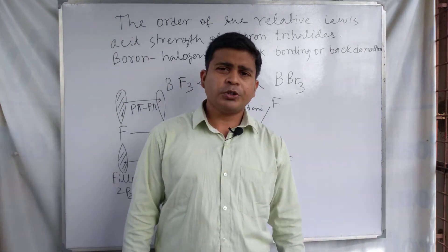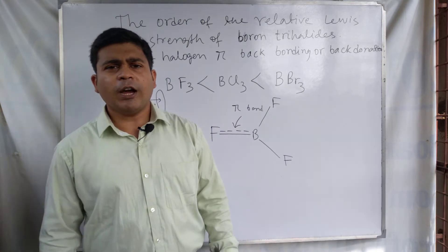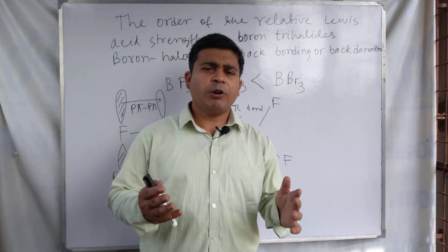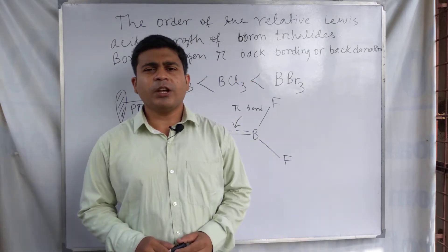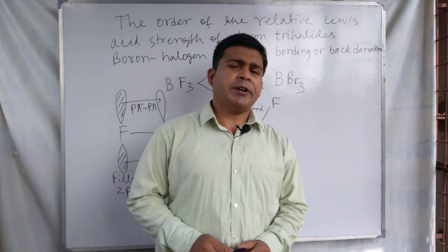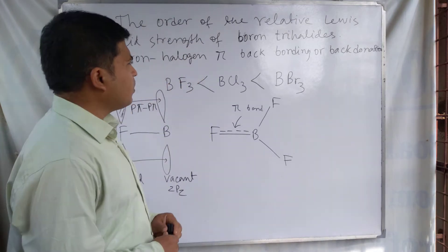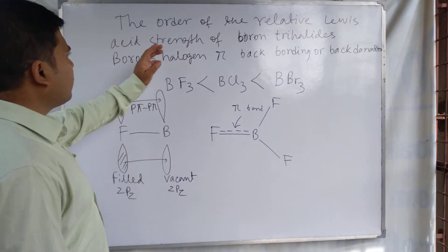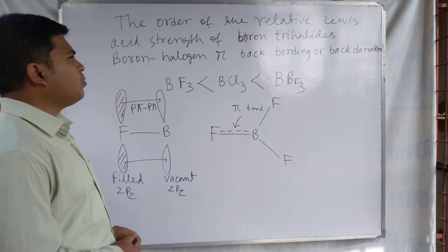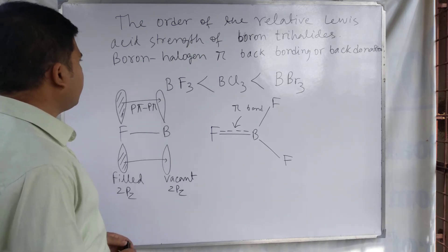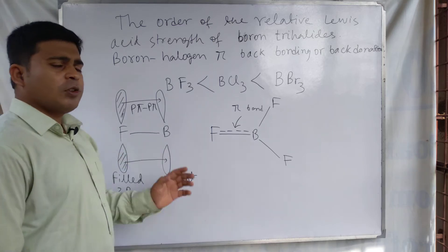Before starting the discussion, if you are new to this channel or you have not subscribed, you can subscribe right now. Our topic is the order of relative Lewis acid strength of boron trihalides and boron-halogen pi back bonding or back donation.